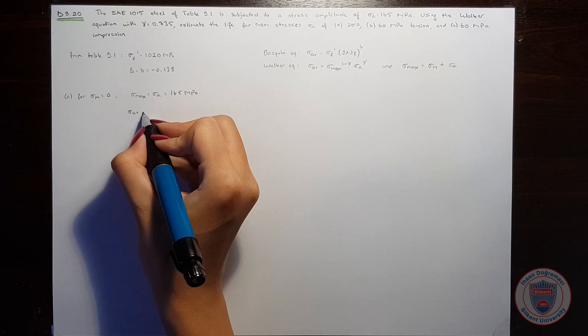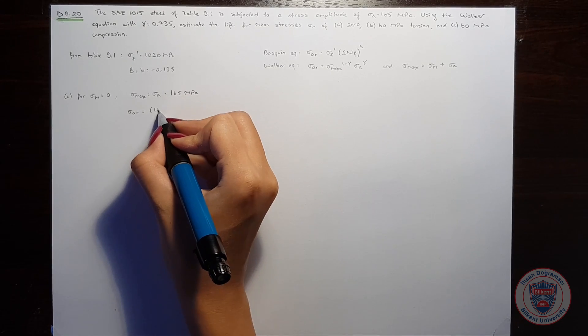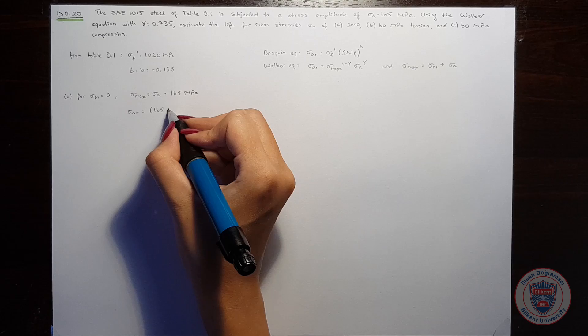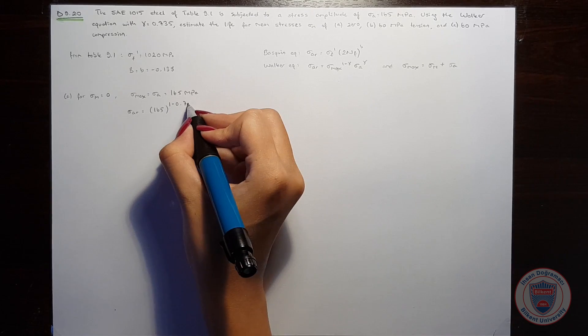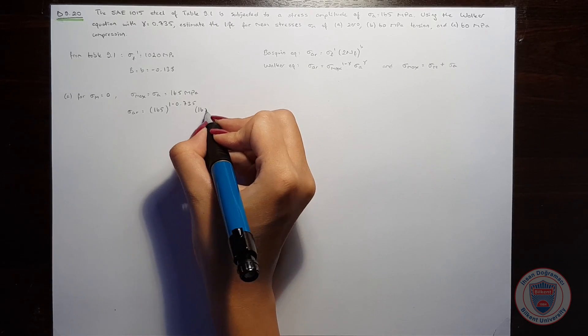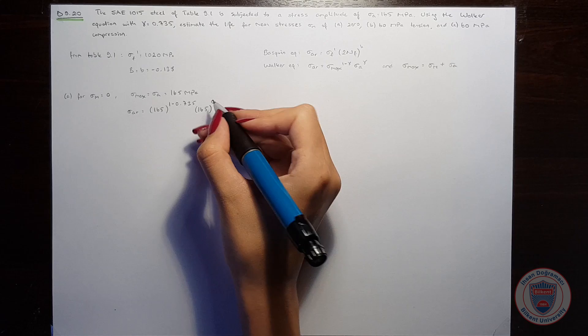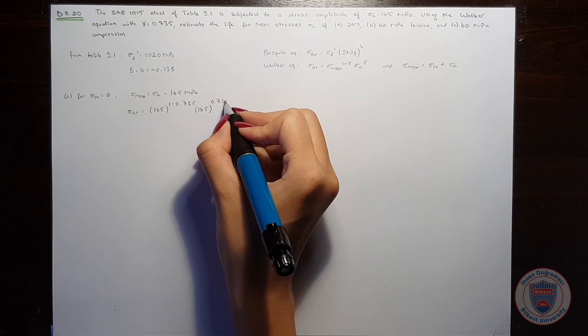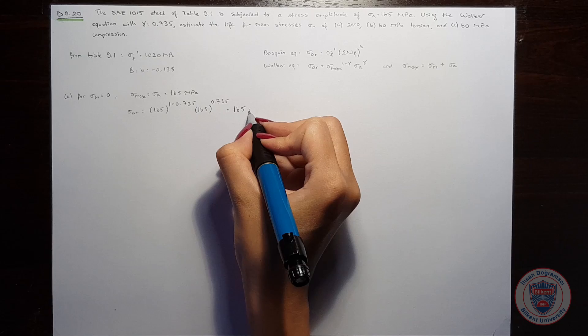Using the Volcker equation, we get 165 to the power of 1 minus 0.735 times 165 to the power of 0.735, which equals 165 MPa.